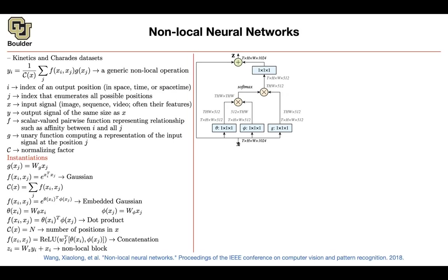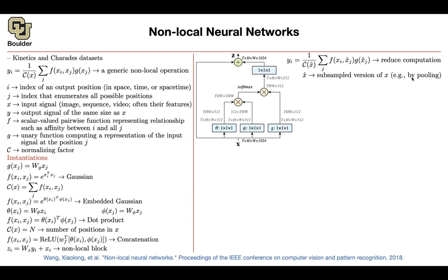There is a problem with these attention mechanisms: their computational cost. Each point has to pay attention to all other positions in your video or image, so per each x_i there is effectively a loop over all x_j — unlike convolutions where the summation is over a small window around x_i. This is not cheap. You can make it cheaper by summing over a selected subset of x_j: push x through a pooling layer to reduce resolution, and then compute attention over that reduced set.